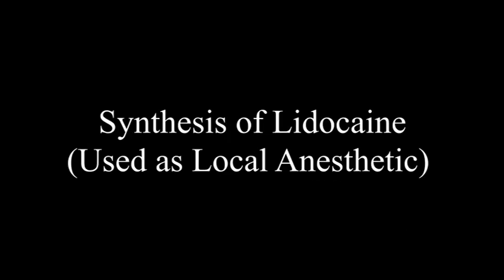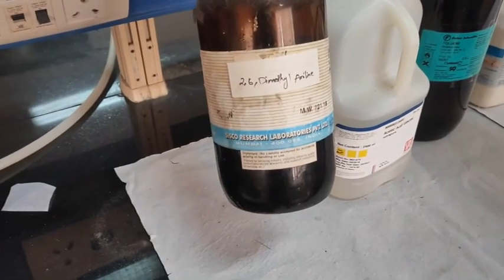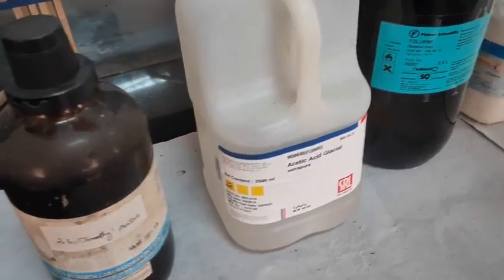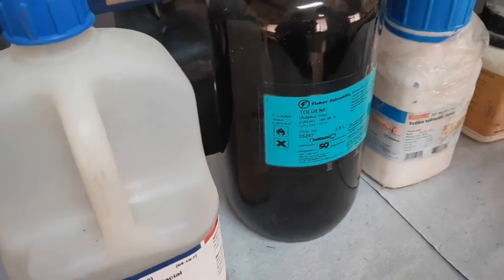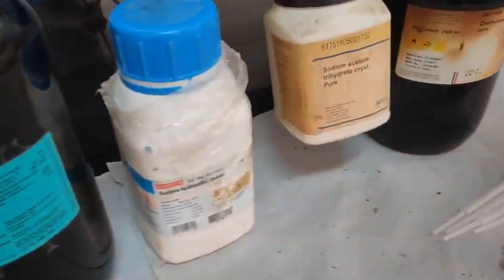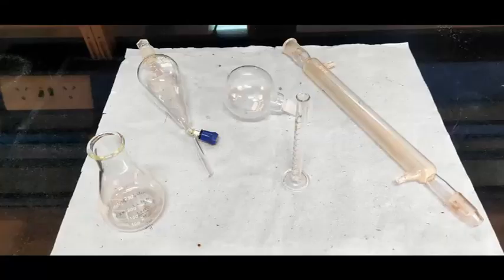This is the fourth lab for pharmaceutical chemistry where we will synthesize lidocaine, a local anesthetic, in two parts. Chemicals used will be 2,6-dimethyl aniline, glacial acetic acid, toluene, sodium hydroxide, sodium acetate, diethylamine, and chloroacetyl chloride. Apparatus includes a separating funnel.